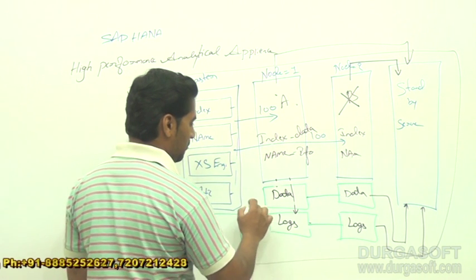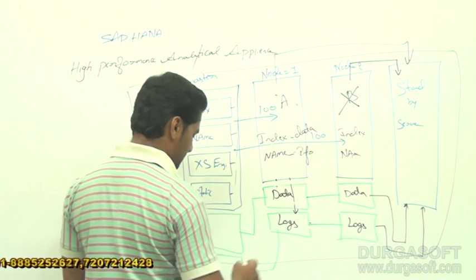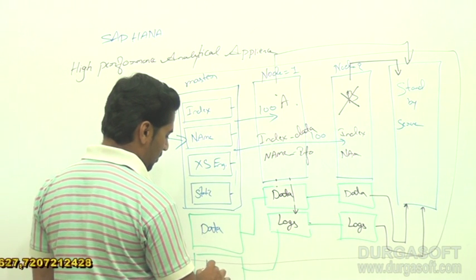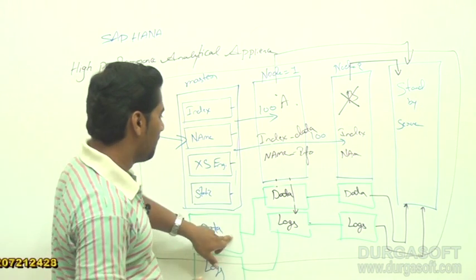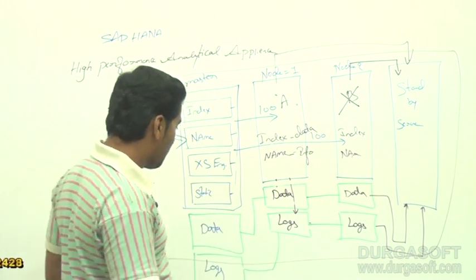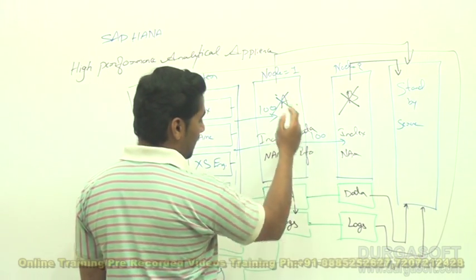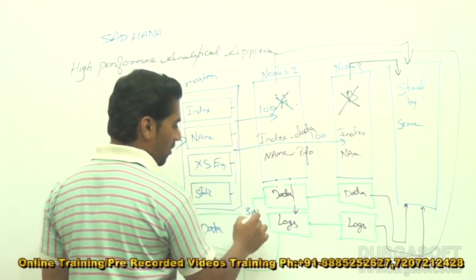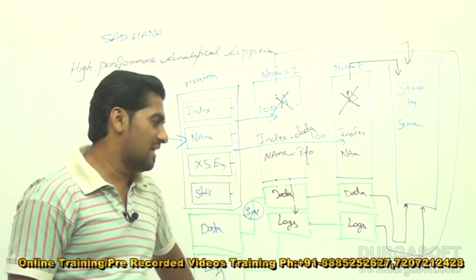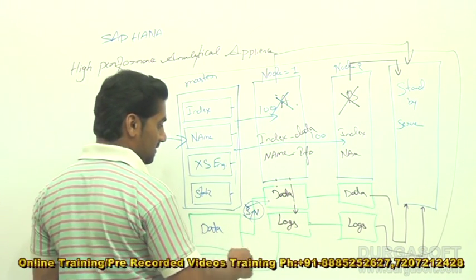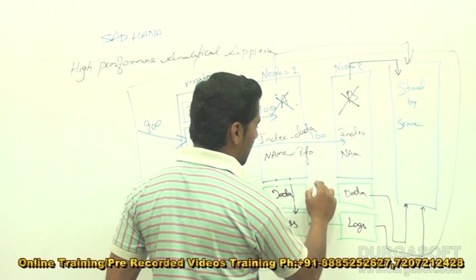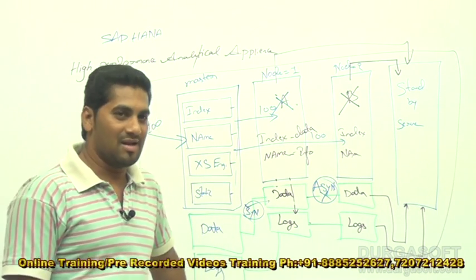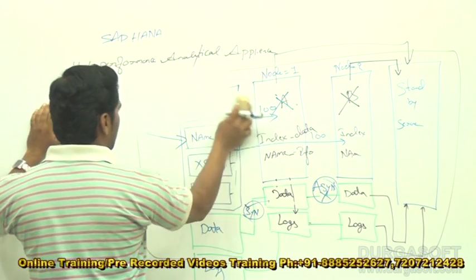The data center connects to data files and the log center connects to log files, always in a synchronized format. We have two types of synchronization: synchronized and asynchronized. It will always perform in synchronized mode; if it crashes, it switches to asynchronized mode. This is how the SAP HANA appliance system works on a real-time basis.